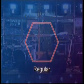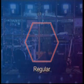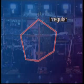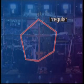Any shape with four or more straight sides is a polygon. There are regular polygons, where all sides are equal, and irregular polygons, where the sides are uneven.